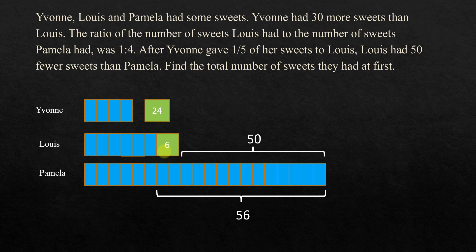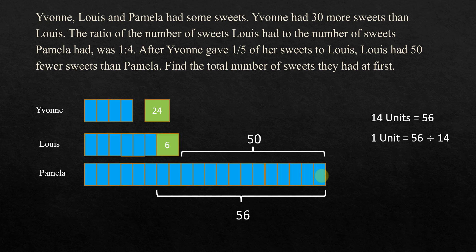All we know is that if we include the 6, then it is 56, and 6 starts at that reference point. Counting the units from that reference gives us 14 units. So 14 units is equal to 56, which means 1 unit is equal to 56 divided by 14, which is 4.